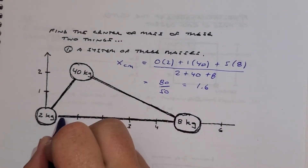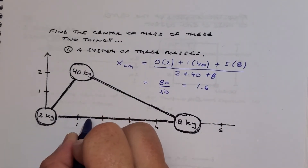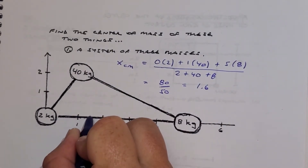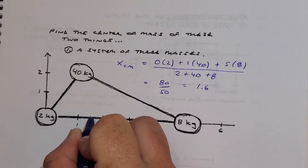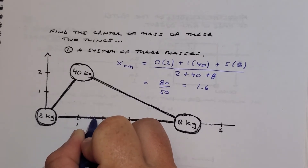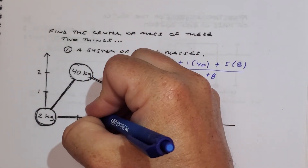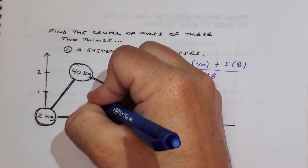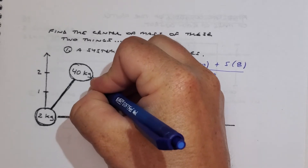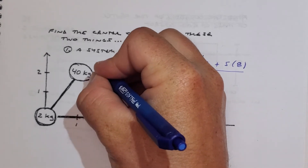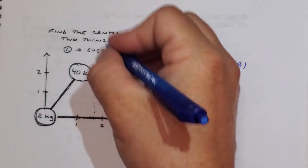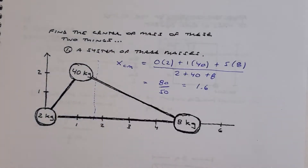So let's see if that makes sense. Going over to 1 and a half — 1.6 would be here-ish. So somewhere along this line is the horizontal center of mass.